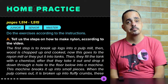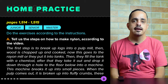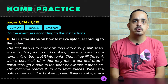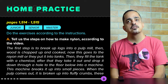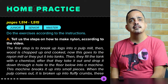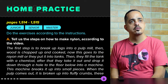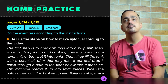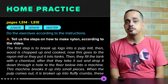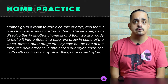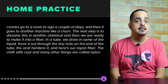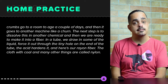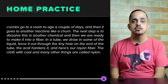The first step is to break up logs into a pulp mill, and then wood is chopped up and cooked. Now this goes to the rail mill, or they put it into tanks. Then they fill the tank with a chemical, and after that they take it out and drop it down through a hole to the floor below into a machine. This machine breaks it up into small pieces. When the pulp comes out, it's broken up into fluffy crumbs. These crumbs go to a room to age a couple of days, and then it goes to another machine like a churn.